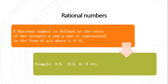Then what is a rational number? A rational number is defined as the ratio of two integers P and Q, and is in the form P by Q where Q is not equal to zero. So any number in the form P by Q where both P and Q should be integers — this is very important. For example, three by five: P is three and five is the denominator, which is Q. Any number in the form P by Q where P and Q are integers and Q should not be equal to zero is a rational number.